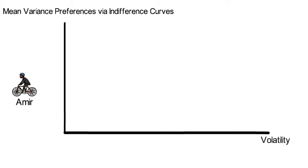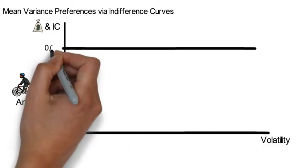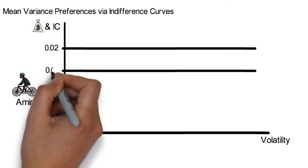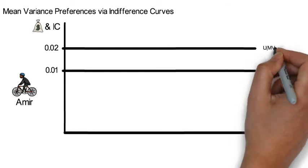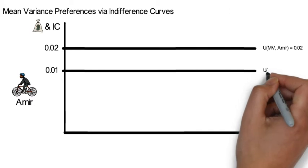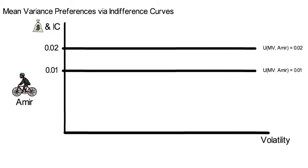On the x-axis we have the amount of volatility of an investment strategy. And on the y-axis we have its expected return as well as the resulting indifference curve. You see that Amir's indifference curve is a horizontal line and his expected utility of an investment coincides with the investment's expected return. Investment strategies that line up on an indifference curve are preference-wise indistinguishable for Amir.